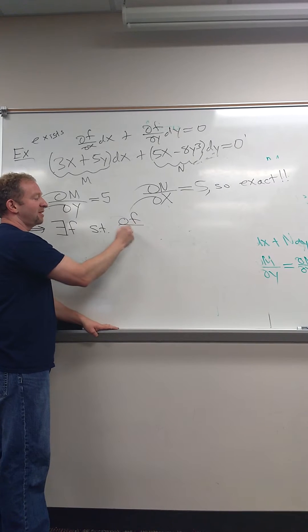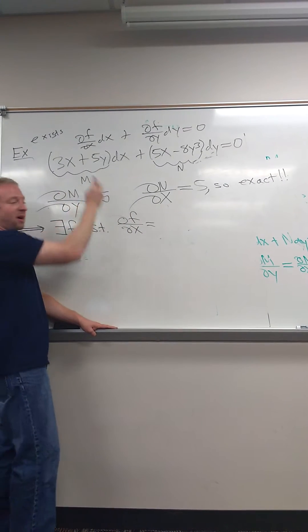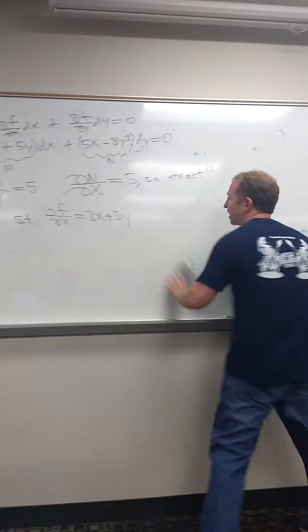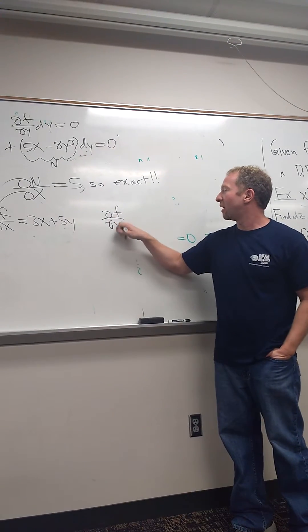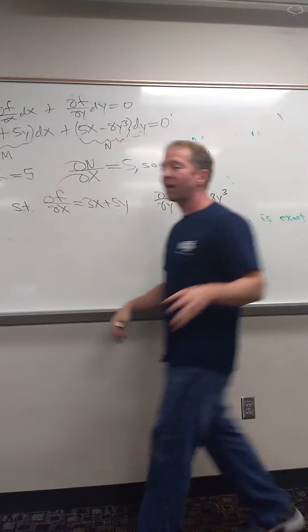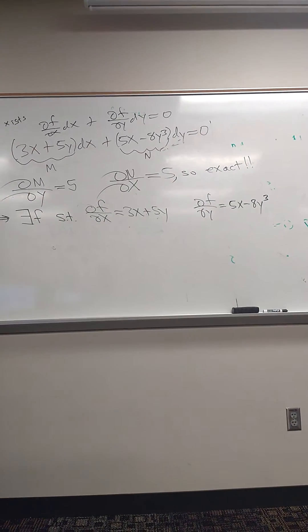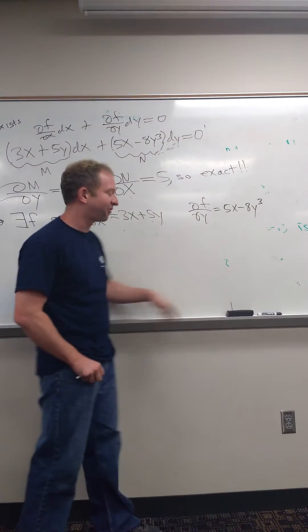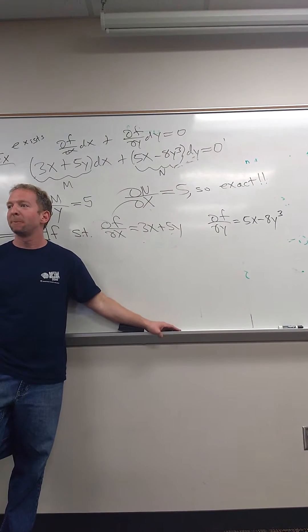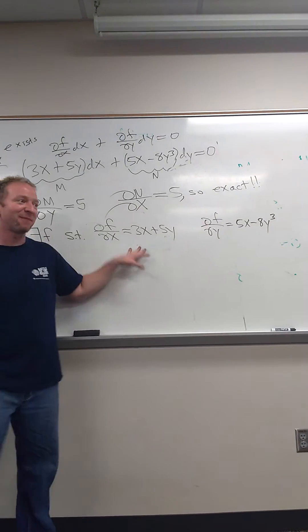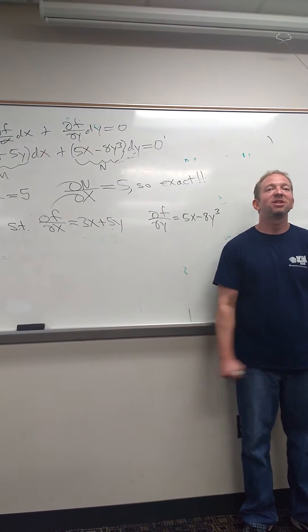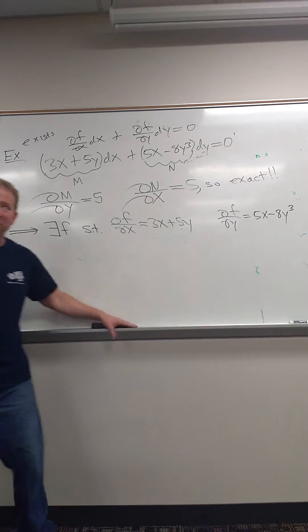So ∂f/∂x dx plus ∂f/∂y dy equals zero. So it means that, okay? So ∂f/∂x is 3x plus 5y. And then ∂f/∂y would be 5x minus 8y cubed. These are not hard, by the way. I did most of the homework pretty quickly. I think 2.2 was probably the worst. I know some of you were saying 2.3 was a breath of fresh air. Any questions up to here? Everyone's still living?